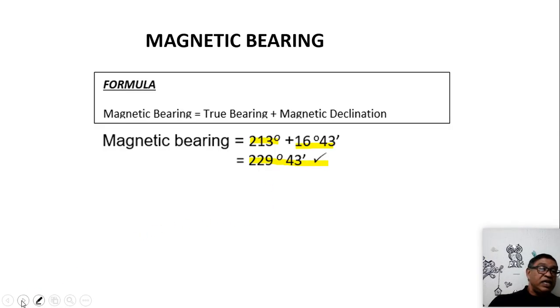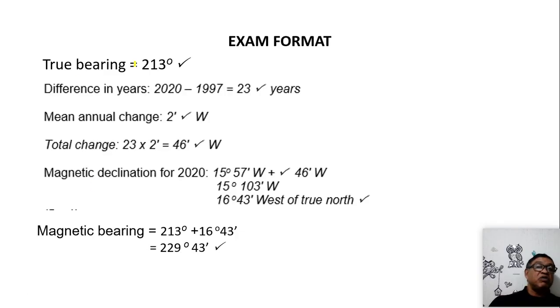Now let's look at how it will look if I write it in exam. So I've got my true bearing. I then show all my steps in terms of the magnetic declination because I'm getting marks. Eventually I show my magnetic bearing answer. This completes the exam format. I would get around seven marks for answering this if this came out as a question.